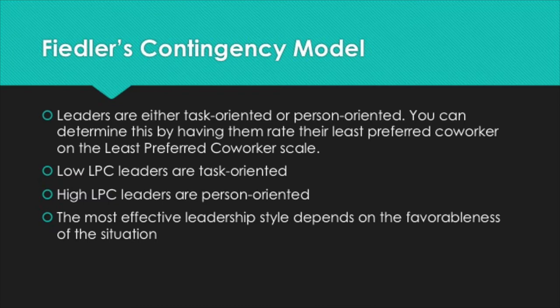Next we have Fiedler's Contingency Model. According to Fiedler, there are two leadership styles. Low LPC leaders are task-oriented and high LPC leaders are person-oriented. You can determine whether a leader is task-oriented or person-oriented by administering the least preferred co-worker scale. Low LPC leaders describe their least preferred co-workers in a negative light because they do not perform well on tasks. High LPC leaders can describe their least preferred co-workers in a positive light because they can mentally separate task performance from other personal characteristics.